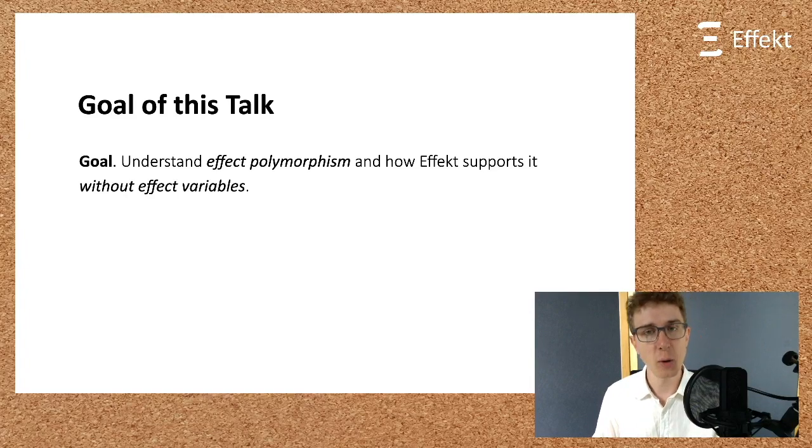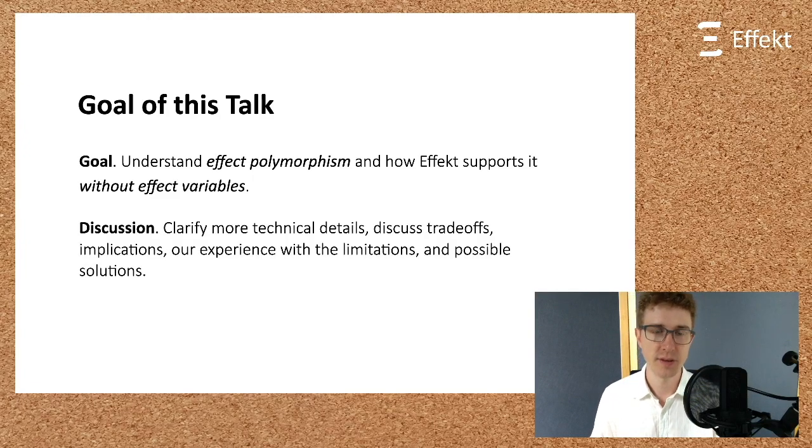I will go into the details later. For now, it suffices to see that there are no effect variables in the signature. After this talk, I hope that we synchronized on our understanding of effect polymorphism and that you have a good idea of how the Effekt language enables effect polymorphism without effect variables. I hope that in the discussion following this presentation we can clarify technical details, talk about implications, limitations, and ways to mitigate those limitations.